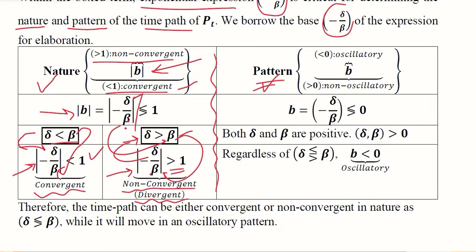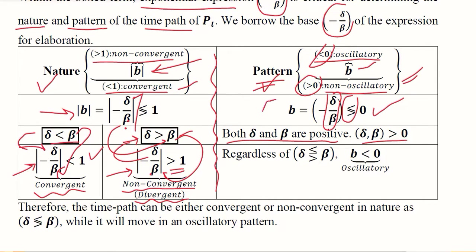For the pattern, we use the original actual value of b. If b is less than zero — that is, negative — the pattern is oscillatory. If b is greater than zero, the pattern is non-oscillatory. Since both beta and delta are positive, dividing two positive values gives a positive answer, and with the negative sign in the formula, b becomes negative. A negative value of b means we will have an oscillatory case.